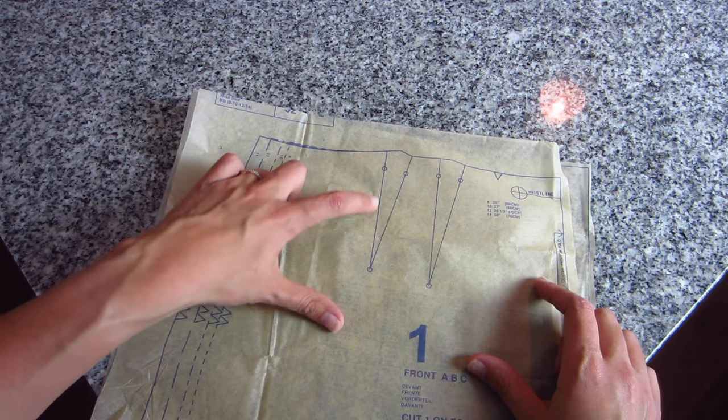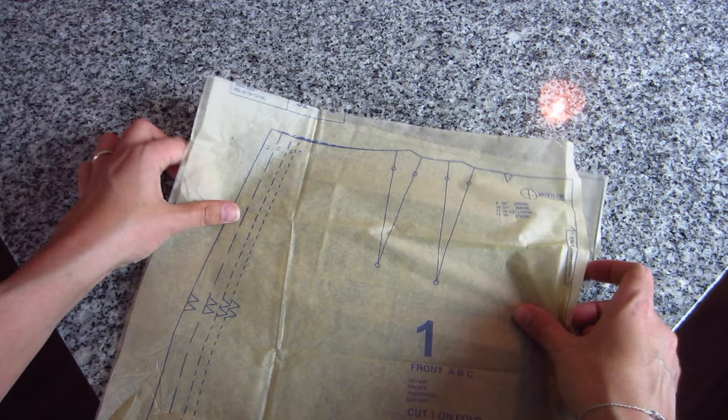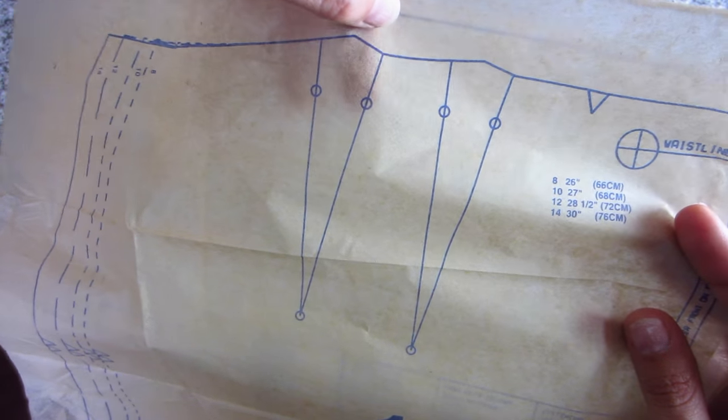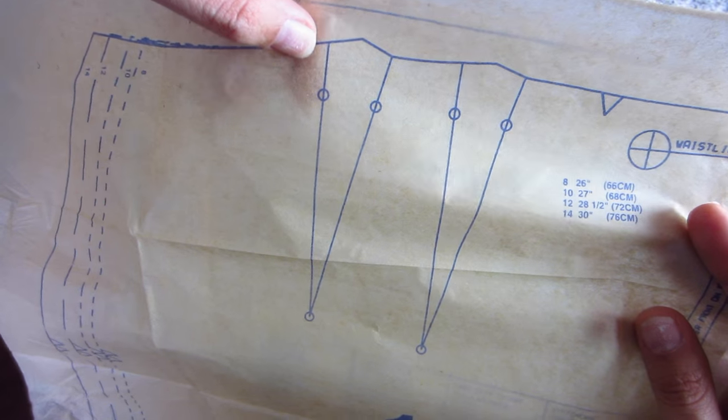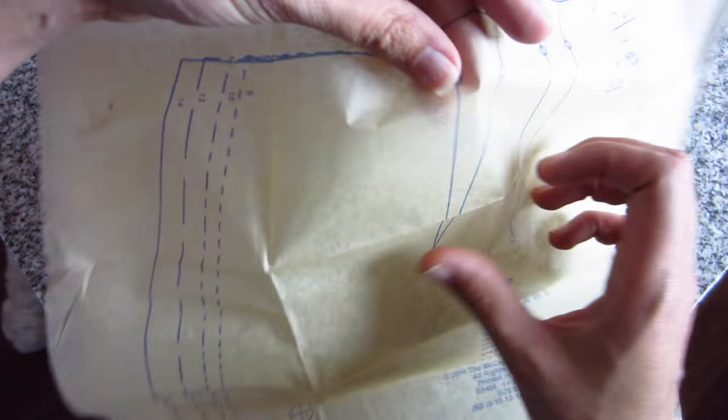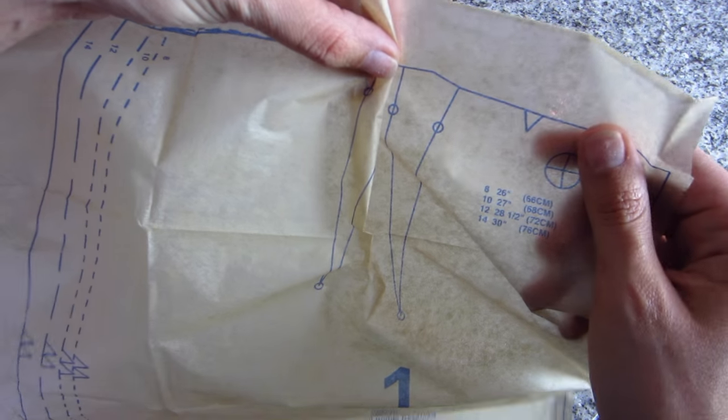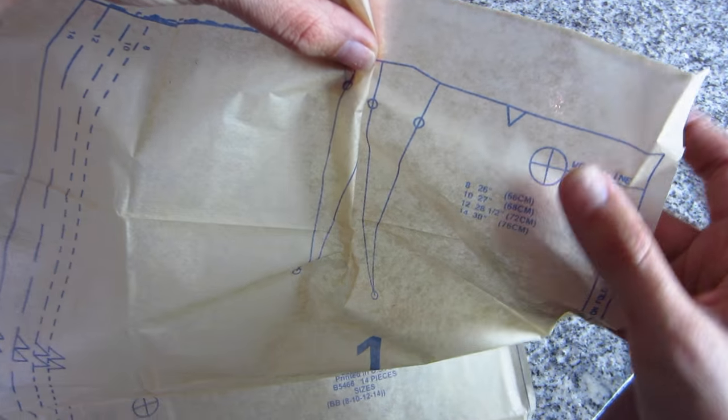This is what a dart looks like on a sewing pattern. You can see here that basically what you're going to do is transfer these markings to your fabric, and then whenever you're sewing your garment, all of this will be pinched out and folded over so none of that will be in your finished garment.